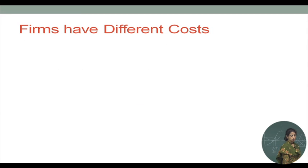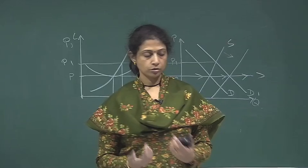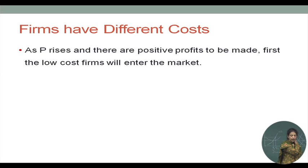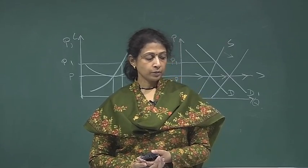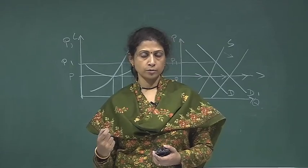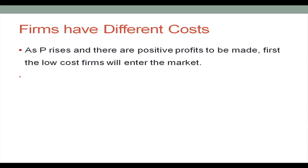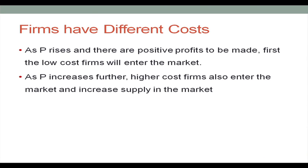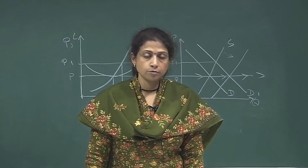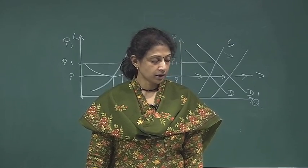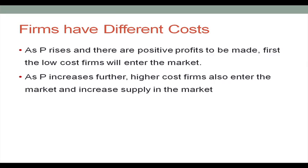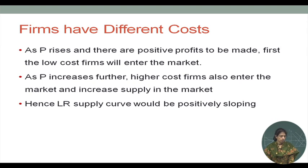The long run supply curve is horizontal under the assumptions that all firms have identical costs and costs do not change with the number of firms in the market. What happens if we relax these assumptions? First, let us assume that firms have different costs — a very realistic assumption. As price rises and there are positive profits to be made, first the low cost firms will enter the market. In this situation the entrants are not exactly the same as each other. As price rises initially it will be the low cost firms who enter, and as price increases further, even higher cost firms find the potential of making profit and enter the market as well, increasing supply even more.